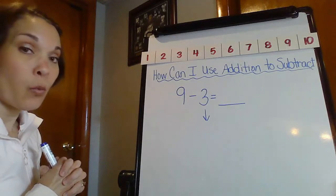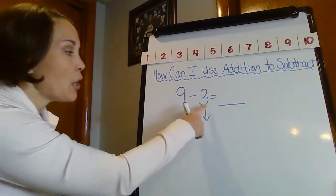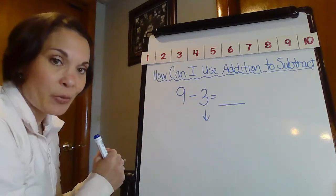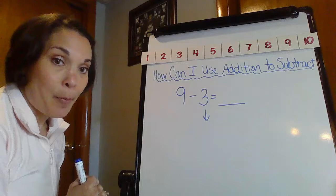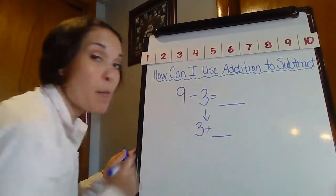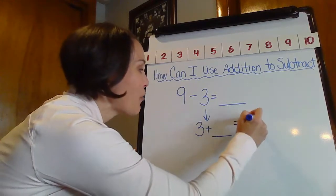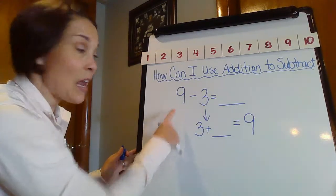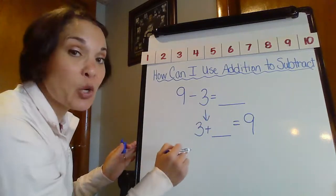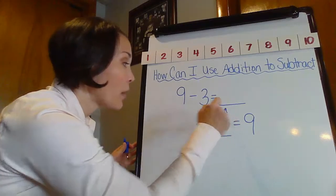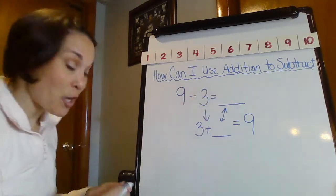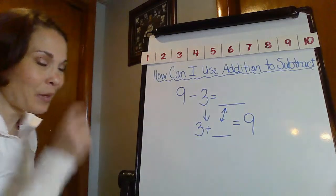So what am I going to do? Notice I have this arrow starting right here because I want to start with that 3. I want to start with that part. 3 plus what number is going to give me this whole piece? 3 plus what is going to give me 9? Because I'm going to tell you right now, whatever we find here is going to be my answer to this subtraction number sentence. It's going to be my difference.